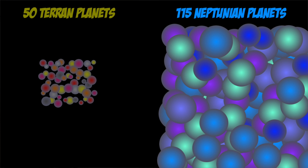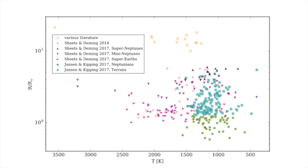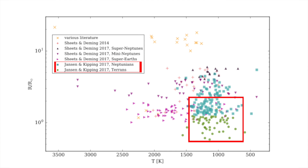For our study, we used archived data from the Kepler satellite to stack the phase curves of 50-some-odd Earth-sized planets and about 115 planets that are more similar in size to Neptune. Similar studies have been done in the past, but as you can see from this figure, our study really gets down into the lowest radius regime yet. And with a herd of 115 planets, this is the largest phase curve ensemble study to date.